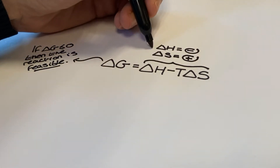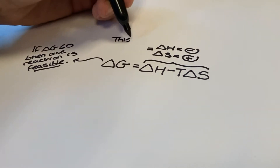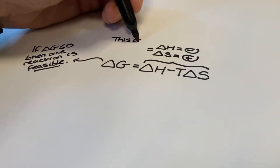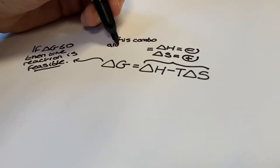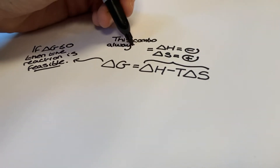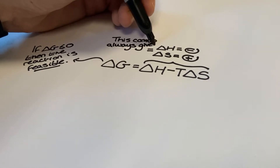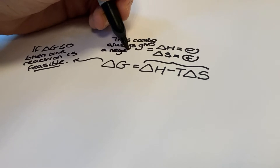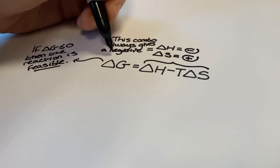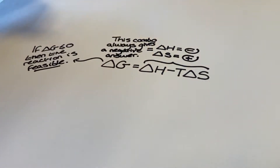This combination of delta H and delta S shows that the disorder of the system is increasing and energy is being released to the surroundings. A reaction like this one is going to be feasible at any temperature, as the value of delta G is always going to come out negative. A combustion reaction would be a familiar example of this type of combination of enthalpy change and entropy change.